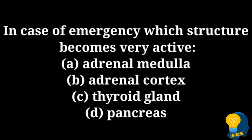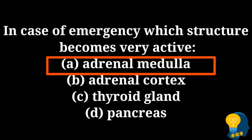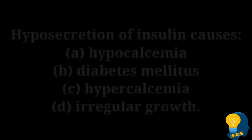The next question is: in case of emergency, which structure becomes very active? The options are option A adrenal medulla, option B adrenal cortex, option C thyroid gland, option D pancreas. The correct answer is adrenal medulla, because it is the inner part of the adrenal gland and it controls the fight-and-flight response in emergency conditions. The adrenal cortex is the outer and largest part of the adrenal gland. Thyroid gland is responsible for thyroxin, and the pancreas produces insulin.